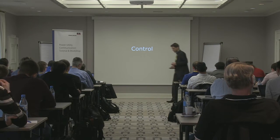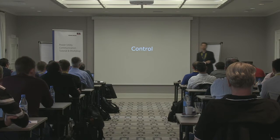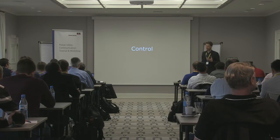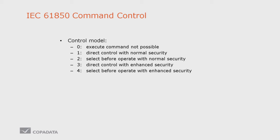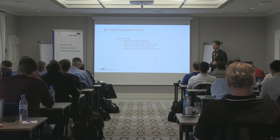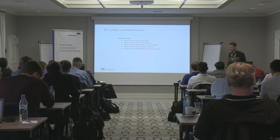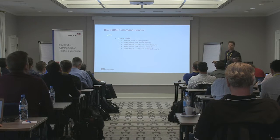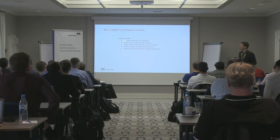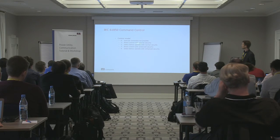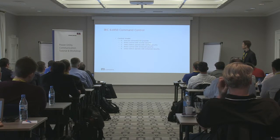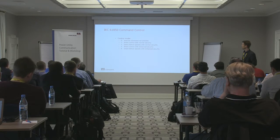This is about engineering. Now just a few words about control, because as I said, it's a little bit of uniqueness dedicated to the client — although the server is executing it. When we talk about command control in 61850, we very early understand that there are different control models. There is control model zero, which means uncontrollable. But then there is one, two, three, four. Direct control is here, then we have normal security, and select before operate.